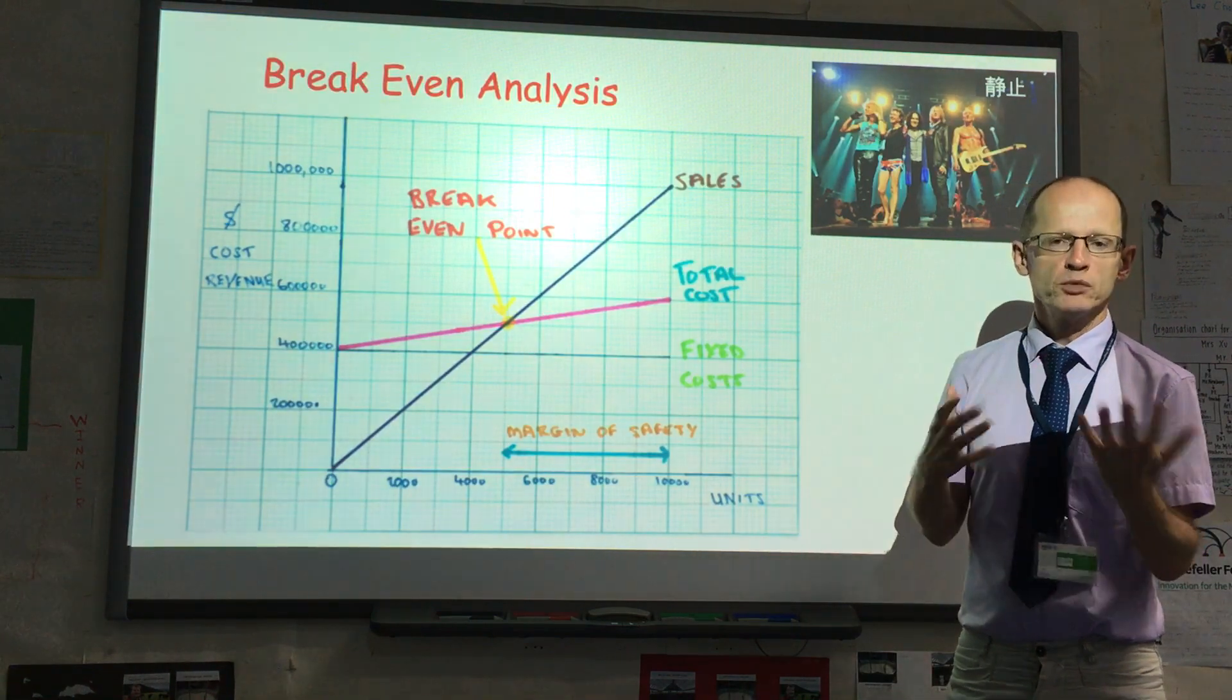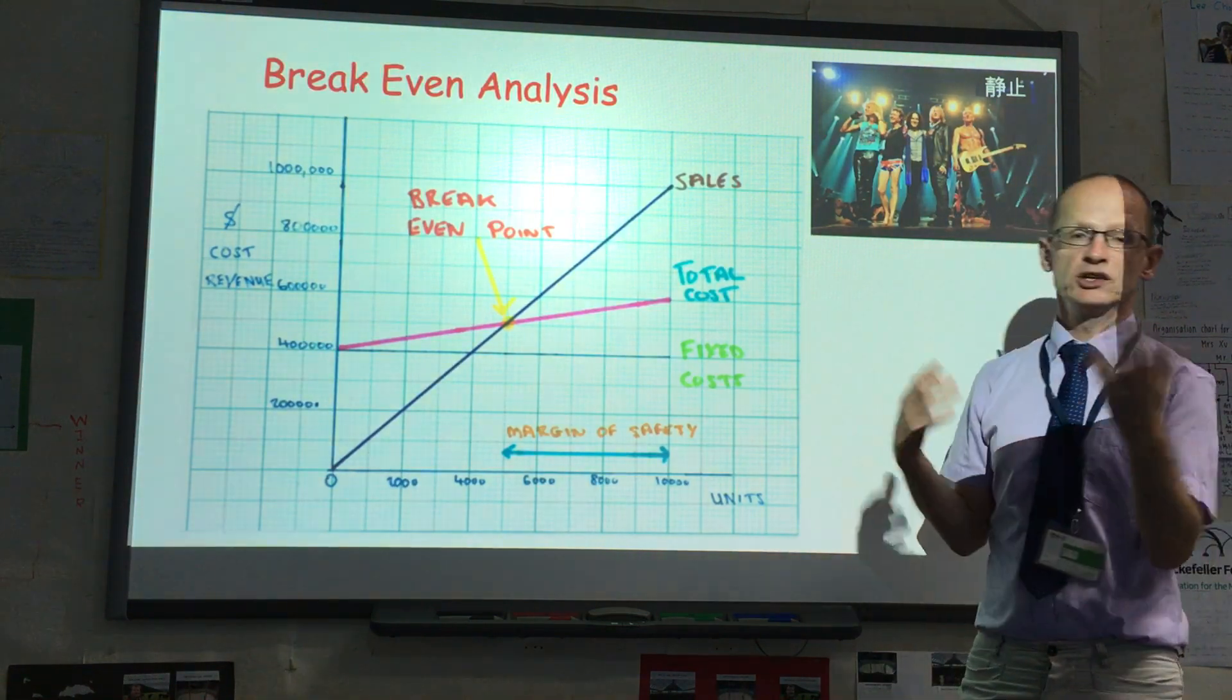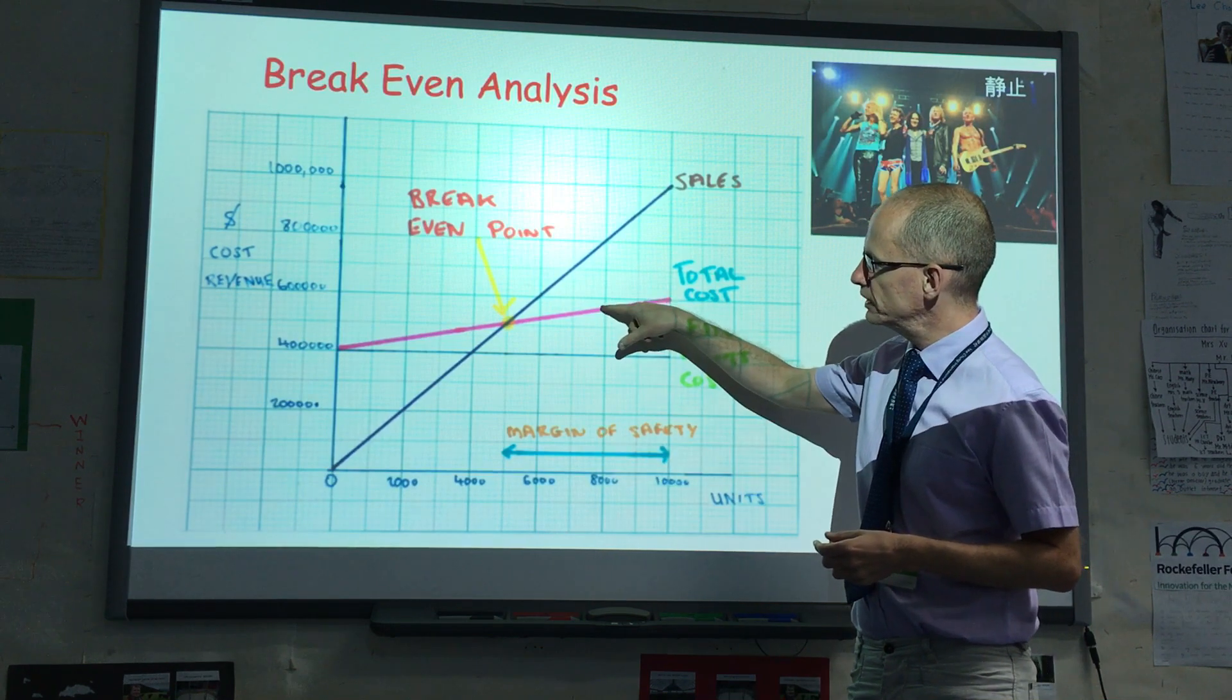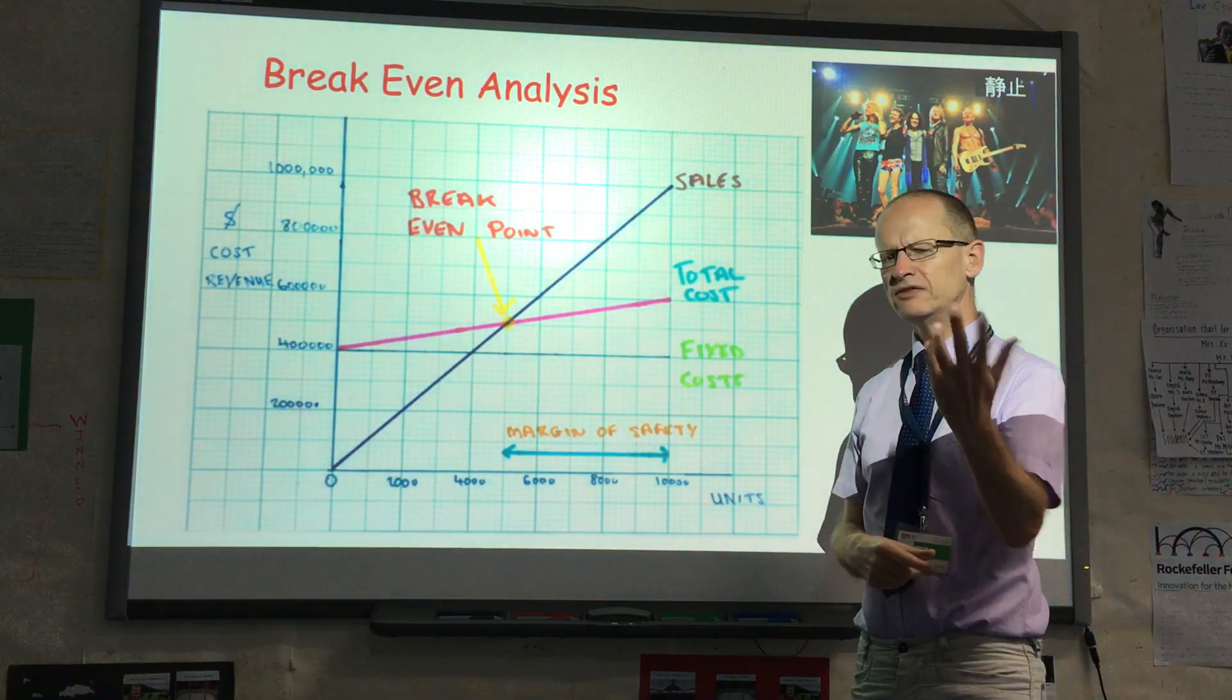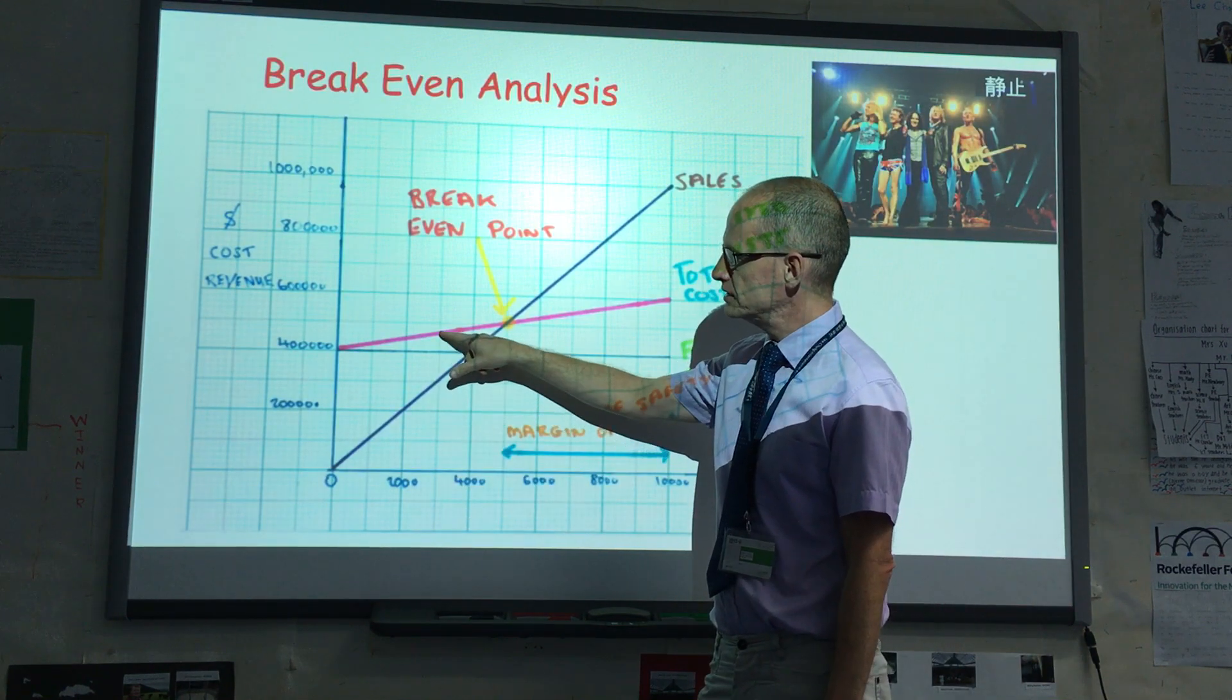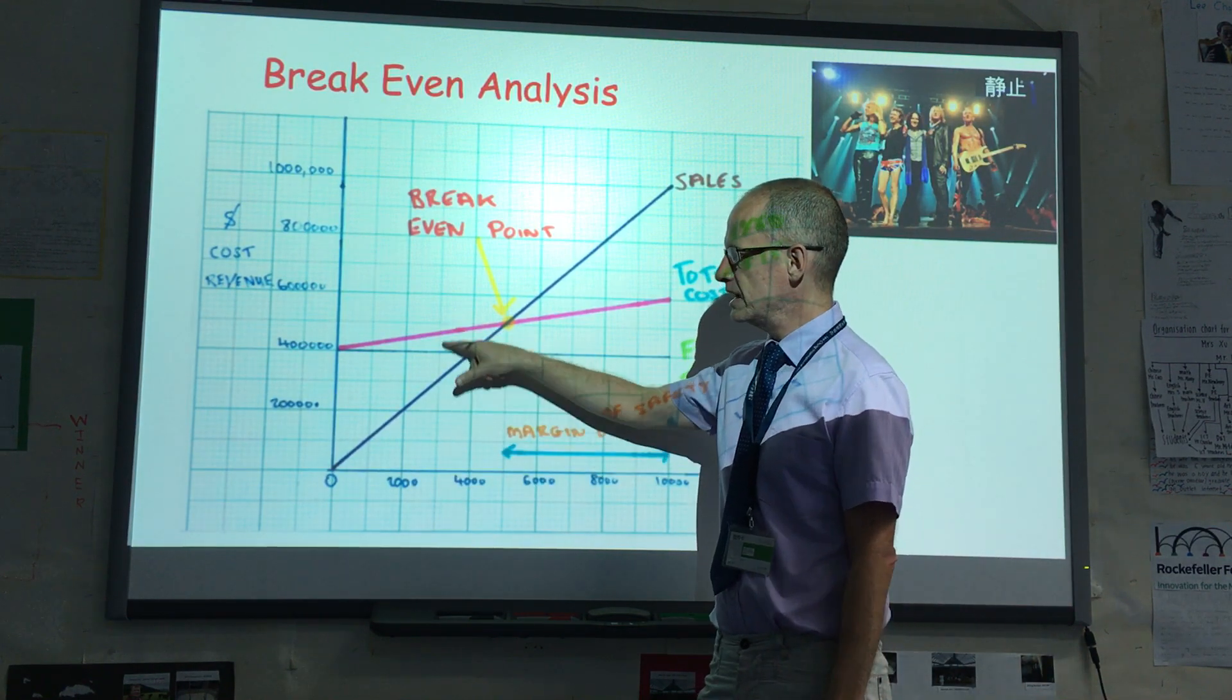Now, you could read off this how much profit or loss does the business make if it sells 8,000 tickets? So we can read the difference between here and here, that's the profit. If they said 3,000 tickets, you just go to here, this is the sales, this is the cost, obviously this is the loss.